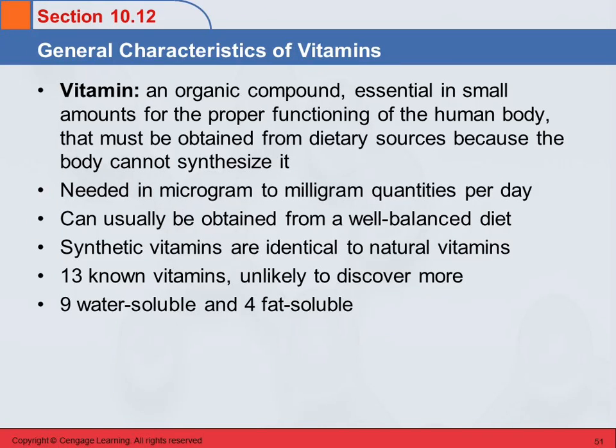On to vitamins. Why are we talking about vitamins in the chapter on enzymes? Because vitamins are often co-enzymes. They are those substances that are needed in addition to the enzyme for it to function. Most of this vitamin content you can read about, so we won't go into a lot of detail here.